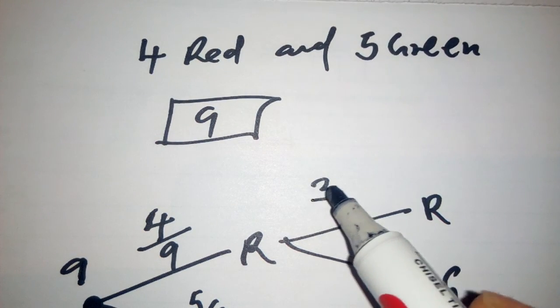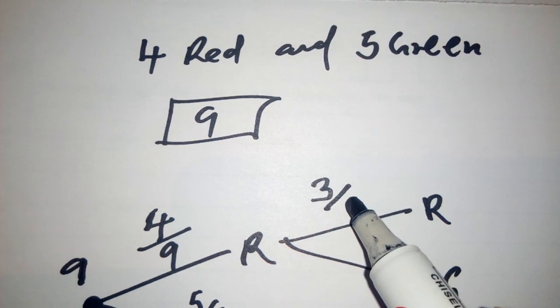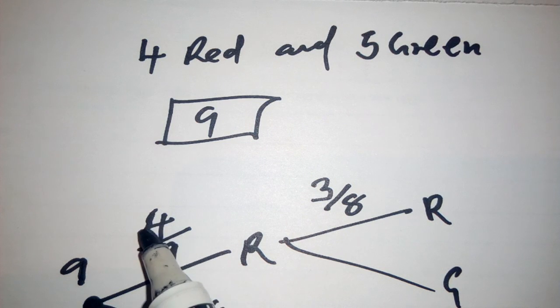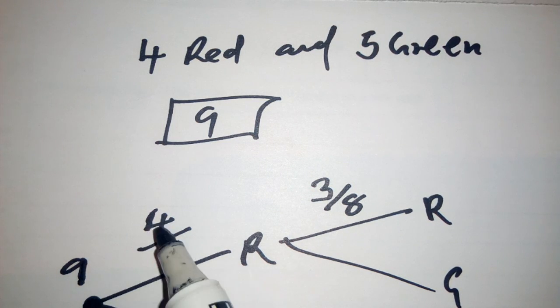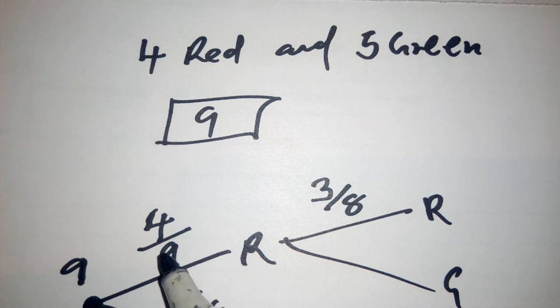So you write the probability of picking red the second time will be 3 over 8. This 3 over 8 means 1 is out, has been picked, which is red. So we remain with 3. The total number of pens in the box were 9. So if we get 1, we remain with 8.